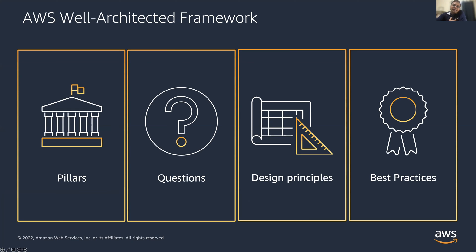The AWS Well-Architected Framework contains four things. First are the pillars — six pillars, which I'll go through in detail, each focused on a specific area. Corresponding to each pillar there are questions — a mechanism to capture data about your application around those pillars. Whether you're a business person or an operations person, these are the kinds of questions you would ask your architects or consider when reviewing your own workload.